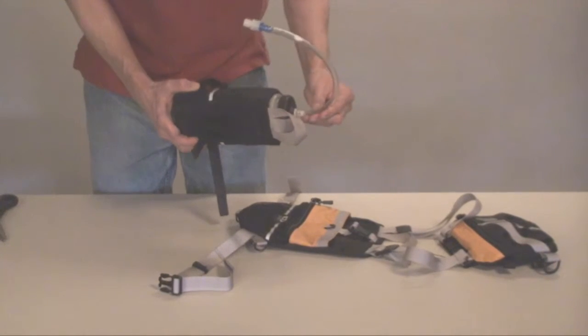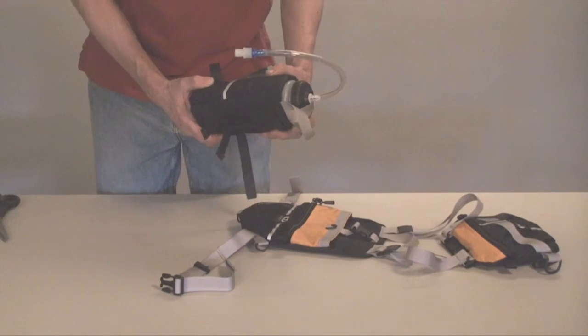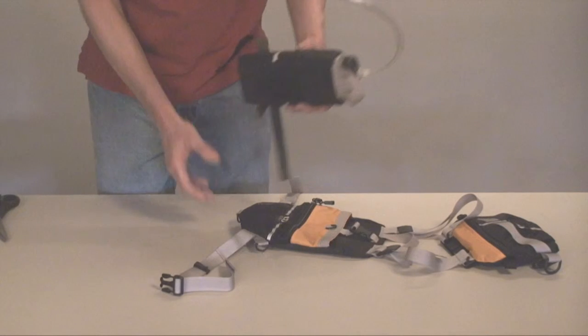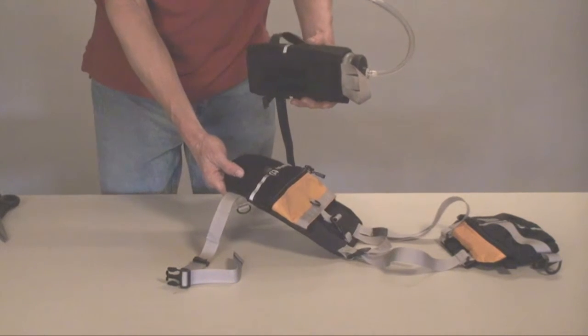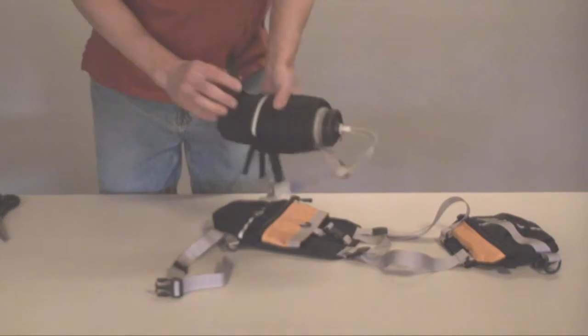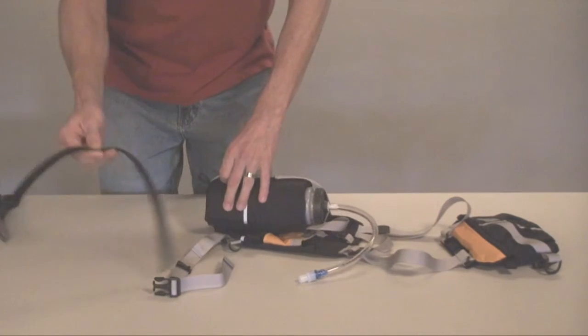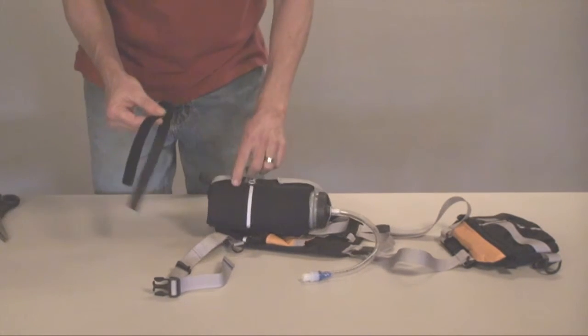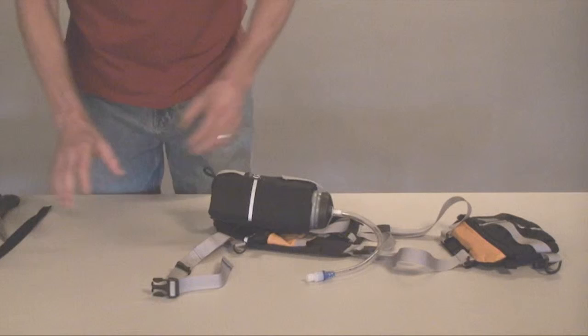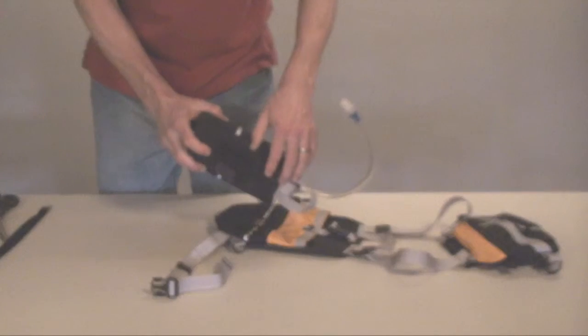This shows you how to attach the water bottle pouch to a waist belt or to the hydration reservoir. First of all, you do not need this thicker Velcro piece right here, so pull it out of the water bottle pouch and set it aside for future use should you decide to use it with a chest module.